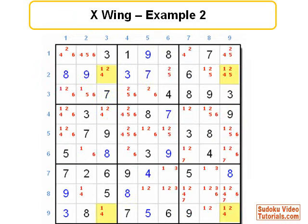So, this is example 2. Here, the highlighted cells form the 4 corners of our rectangle. Each of the highlighted cells contains a 4 forming our X wing.